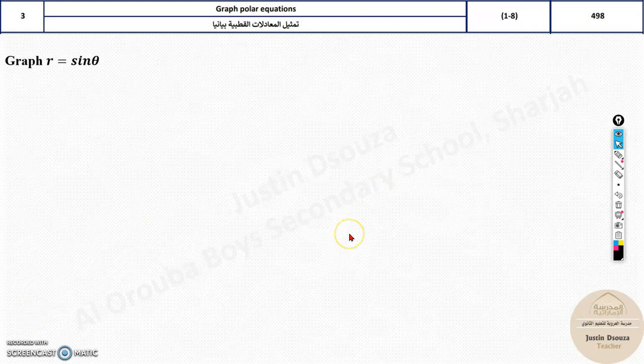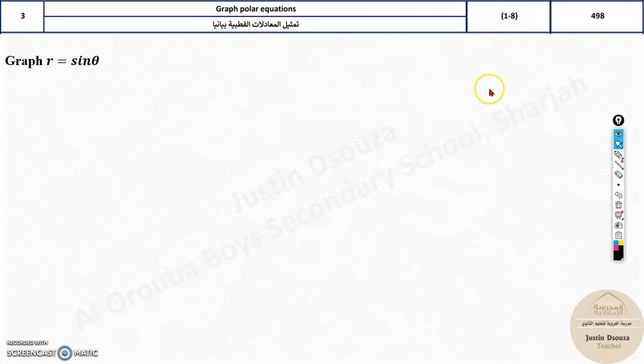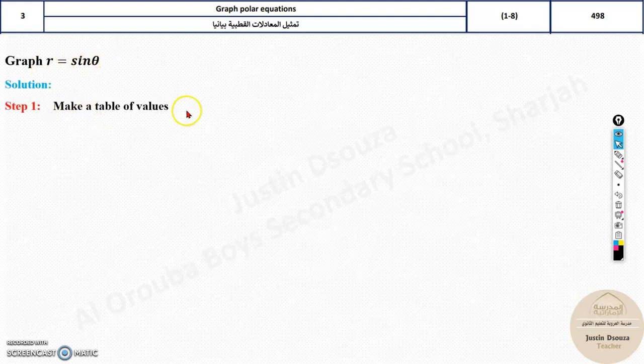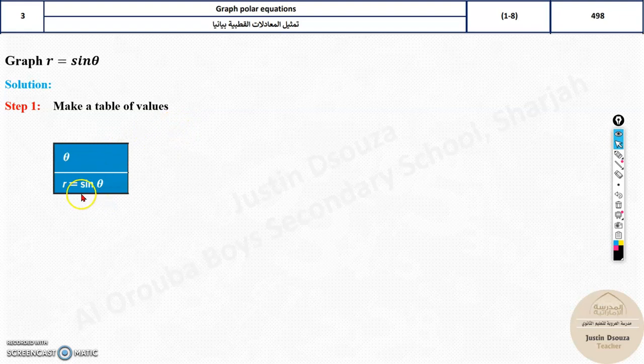The third topic is to graph polar equations. In the third topic of your exam scheme, they have specifically asked you problems where they have asked you to plot the points. So now, how do we do it as r = sinθ is given? What you need to do is make a table of values with theta and the radius r, that is the sinθ.